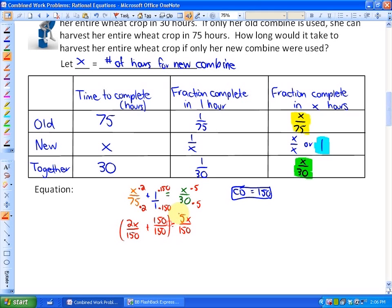We'll have 2x plus 150 equals 5x. After we subtract 2x, we're left with 150 equals 3x. After we divide by 3, x equals 50, which is a sensible answer since together they can do it in 30 hours. It should take longer for the new one, but probably not as long as the old combine. So 50 hours makes sense. Our answer is 50 hours.